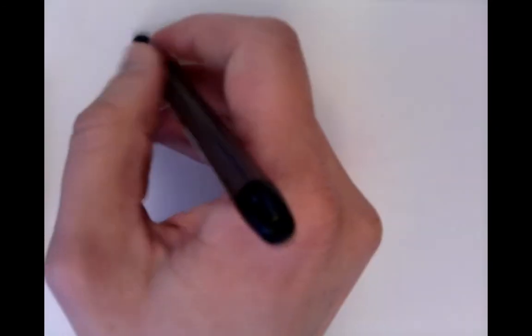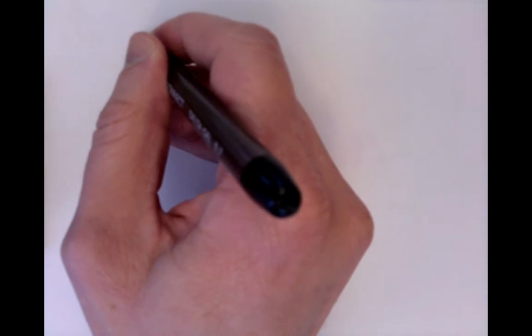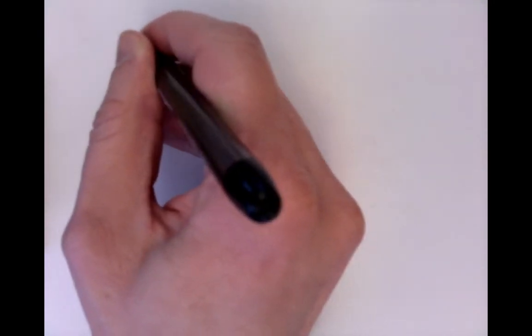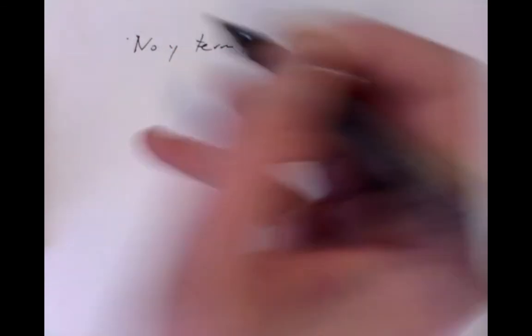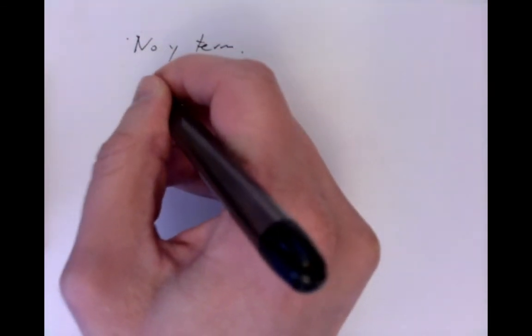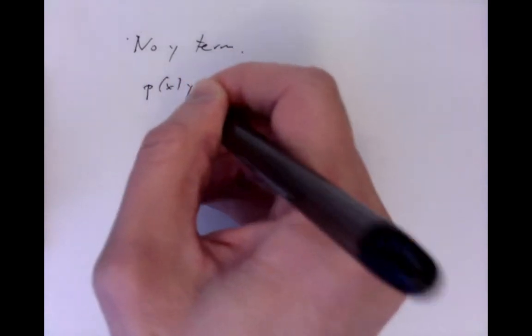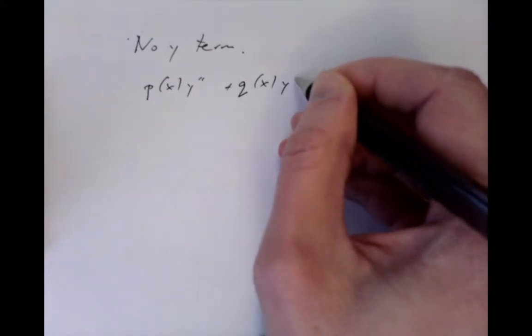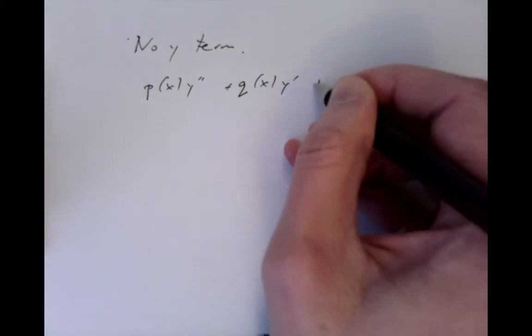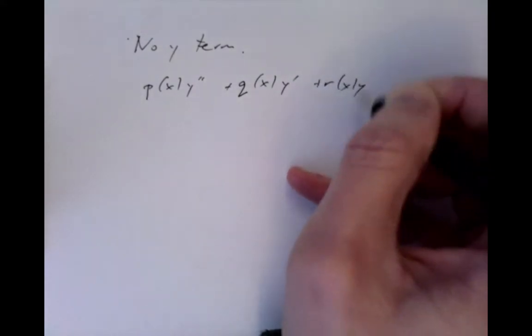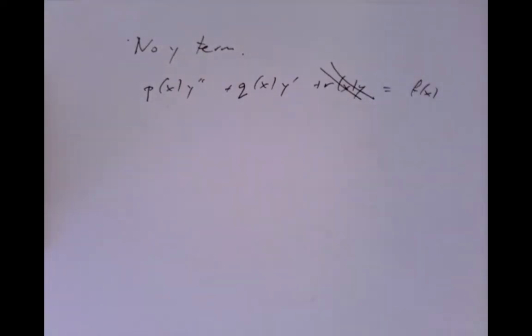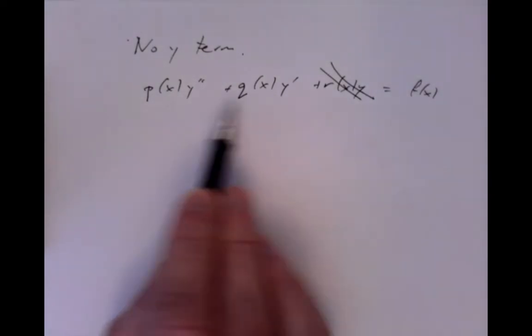A particularly simple situation where we can do this is to think about a problem in which there is no y term. So we have a differential equation which looks maybe like this, but there would usually be some r(x) y term. Suppose that one's gone. So maybe these aren't constant, the p and the q, but we don't have the y term.